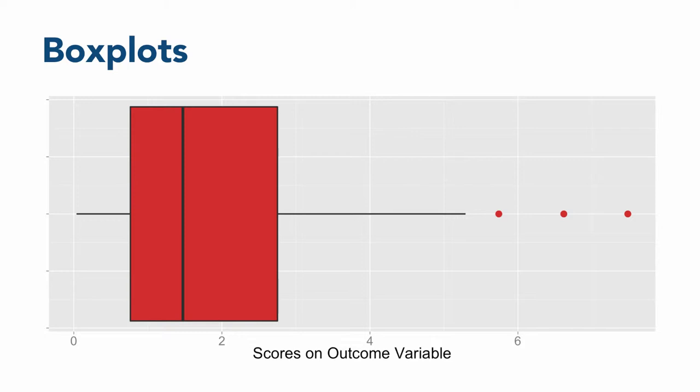Boxplots are especially useful to check for outliers and to check symmetry. Boxplots get their name from the box in the middle of the chart. That box shows the scores that mark off the middle 50 percent of the distribution by starting at the 25th percentile score, or first quartile of the distribution, and stopping at the 75th percentile score, or third quartile.